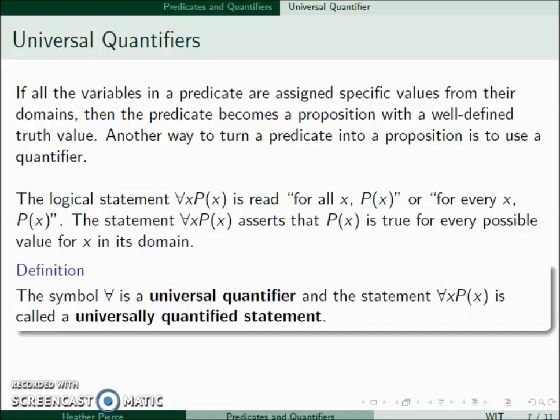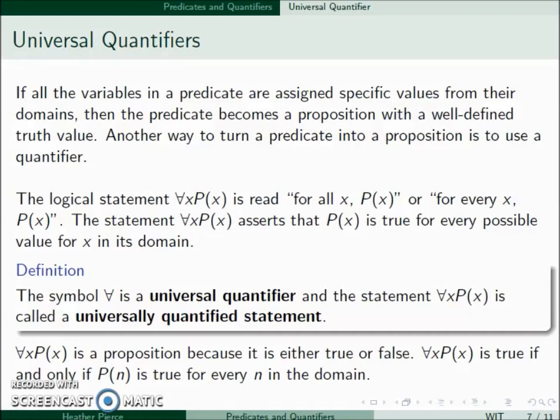This is saying it doesn't matter what values of x you stick in, it should always be true. ∀x P(x) is a proposition because it's either true or false. It's true if and only if P(n) is true for every single n in the domain.